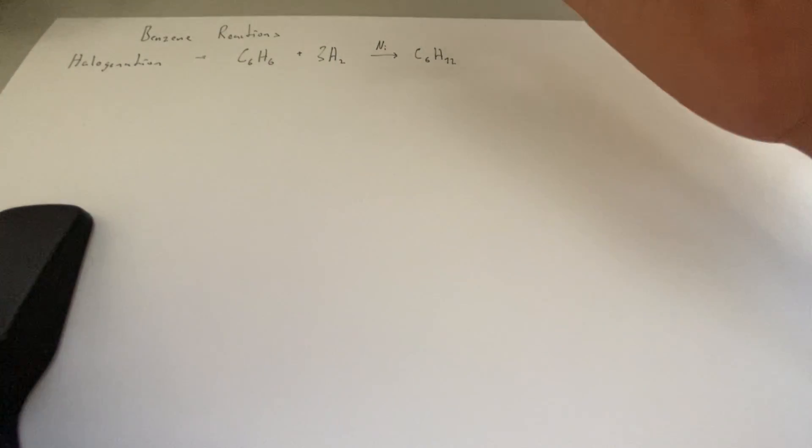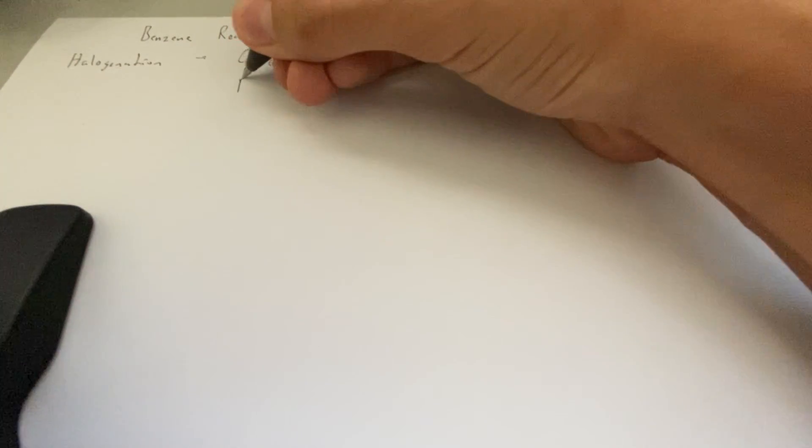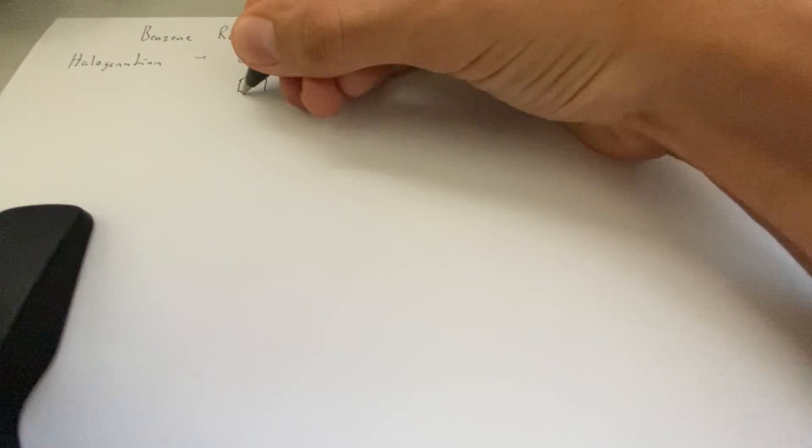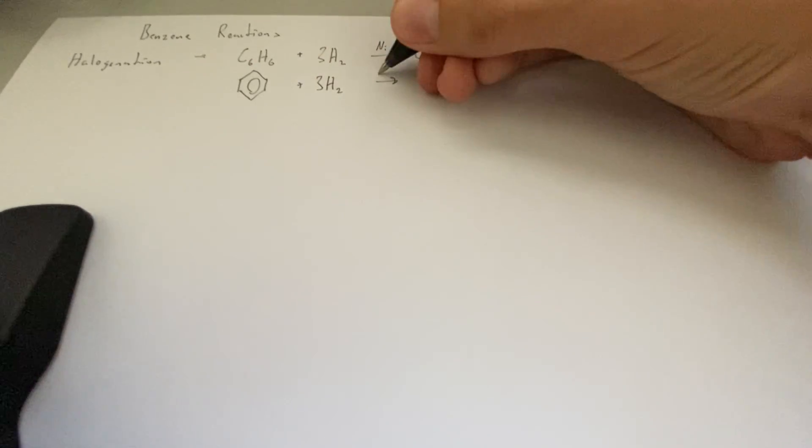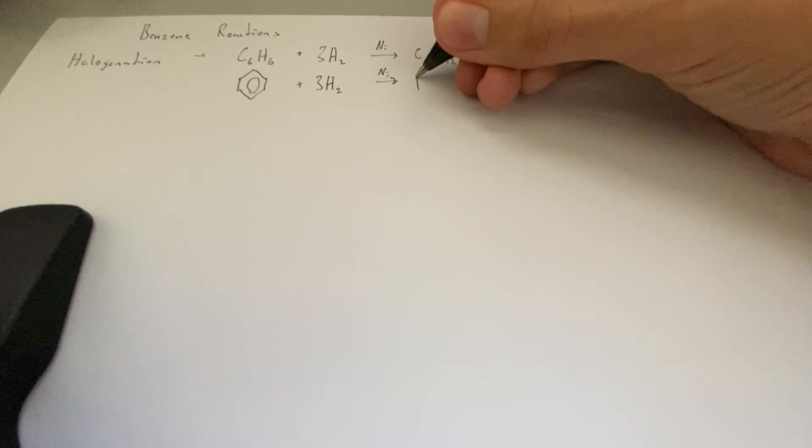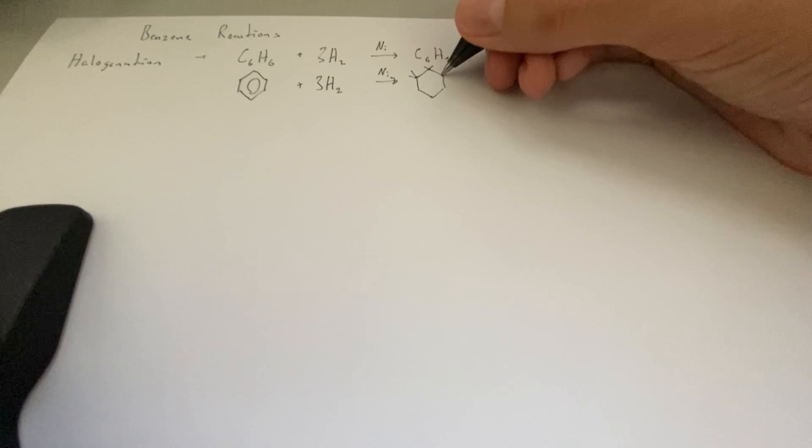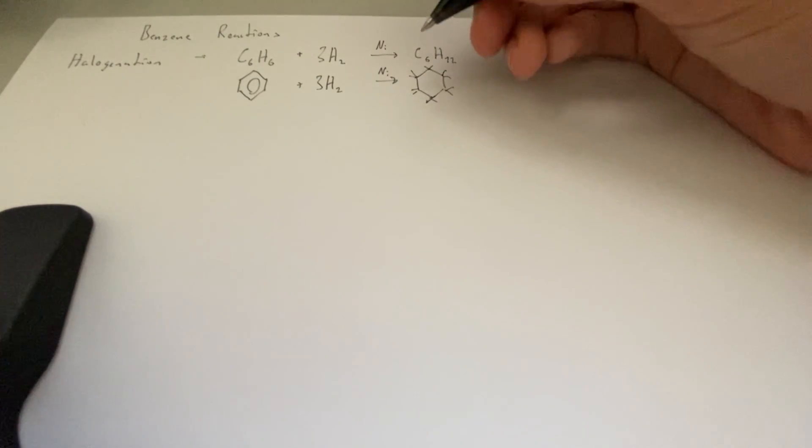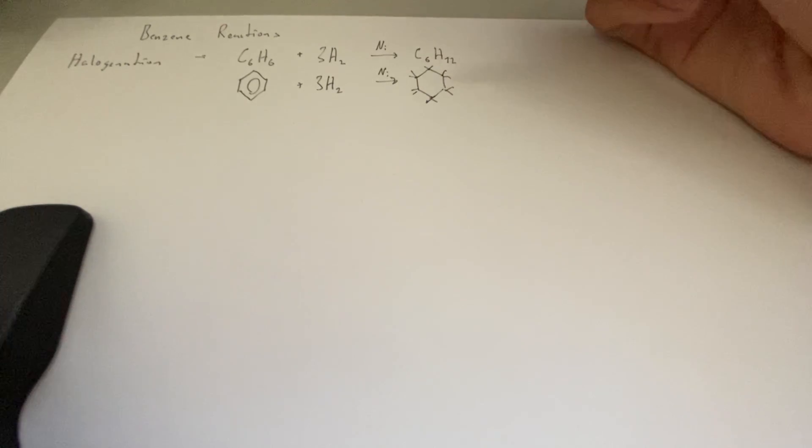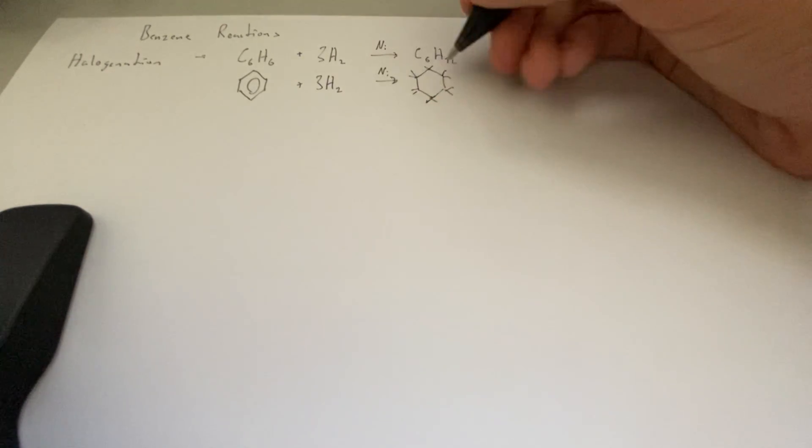That gives us C6H12. We had a delocalized ring of electrons in benzene. Then we have 3H2, so now the hydrogens are going to be on either side like this. To keep the video short, I'm not actually going to draw all the hydrogens.